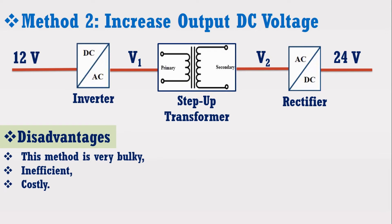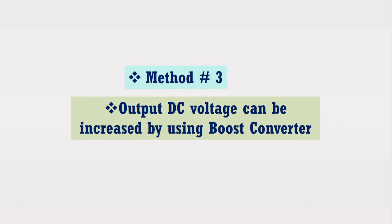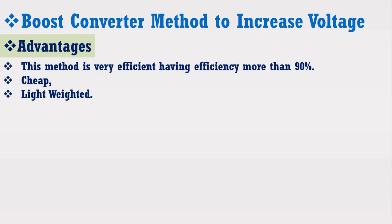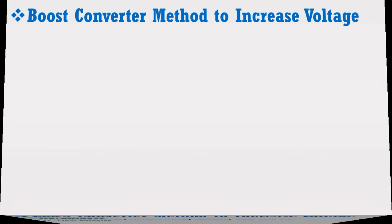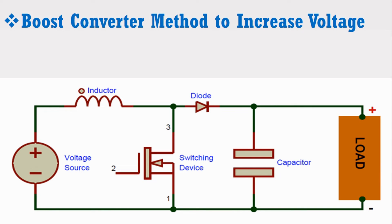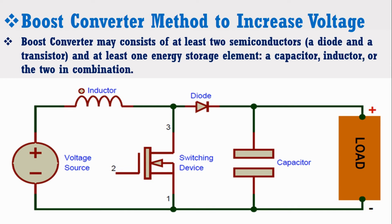To overcome these issues, the output DC voltage can be increased by using the boost converter method. The boost converter has the advantages that it is very efficient, with efficiency higher than 90%. Furthermore, it is very cheap and lightweight. Consider the circuit diagram of the boost converter: it consists of at least two semiconductors — a diode and a transistor — and at least one energy storage element such as a capacitor, inductor, or both in combination.